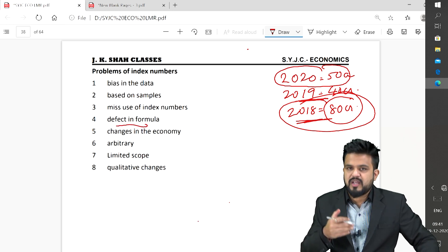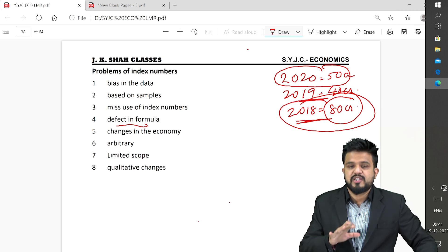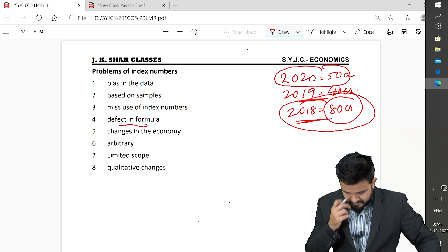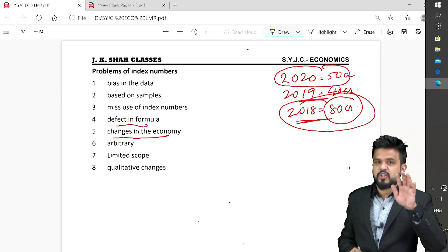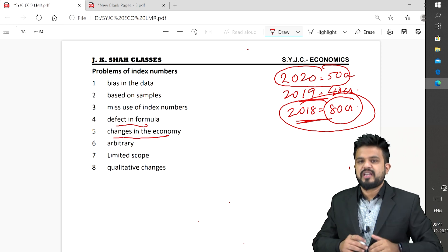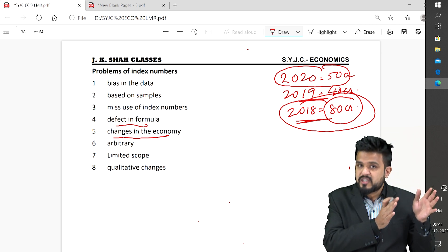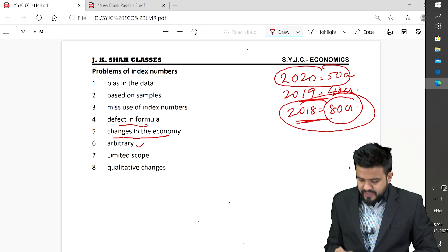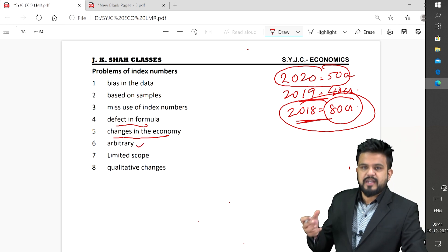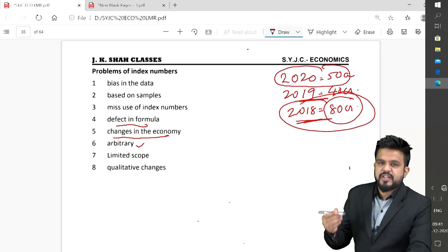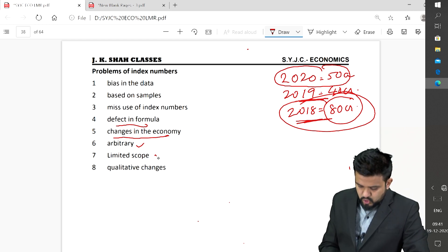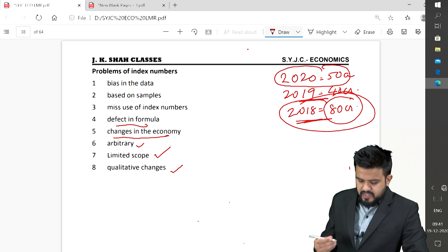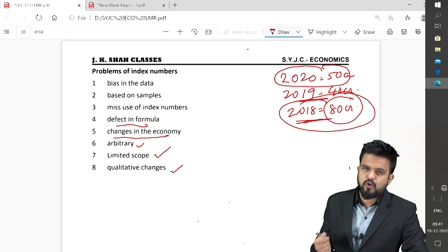Defect in the formula, formula is not 100 percent accurate because it is just an average, just a mean. Then changes in the economy, nothing remains constant, everything keeps on changing. There is nothing called static, everything is dynamic, keeps on changing. Arbitrary means randomly, the data collection is done randomly, there is no proper method to collect data. Arbitrary changes taking place, scope is limited, may not be used for all purposes. Qualitative analysis, it should be more of quantitative, not qualitative.